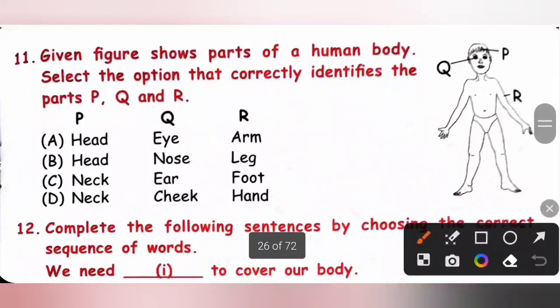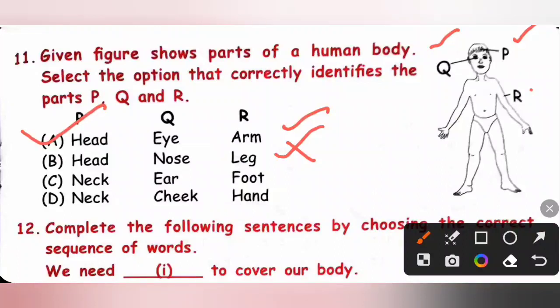Eleventh one. Given figure shows parts of a human body. Select the option that correctly identifies the part P, Q and R. So, P is a head. So, either option A or B will be the correct answer. Q. Q is the eye. So, option A is the correct answer. P, head, Q, eye and then R, arm. Upper arm. So, option A is the correct answer.